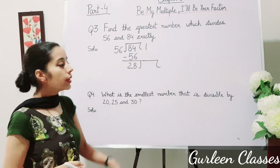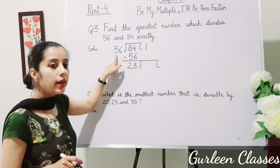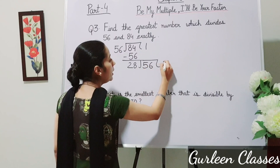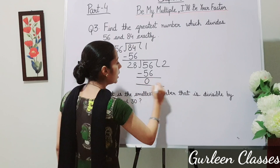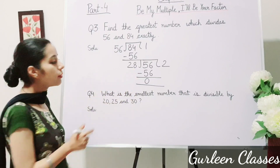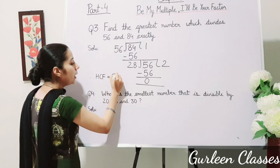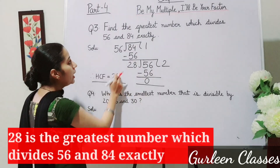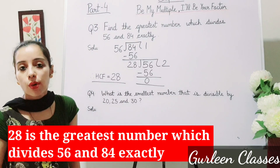We keep dividing until we get remainder 0. Now 28 is the new divisor and the old divisor 56 becomes the new dividend. 28 into 56 — subtracting gives remainder 0. The last divisor will be the HCF. So HCF is equal to 28. Therefore, 28 is the greatest number which divides 56 and 84 exactly.